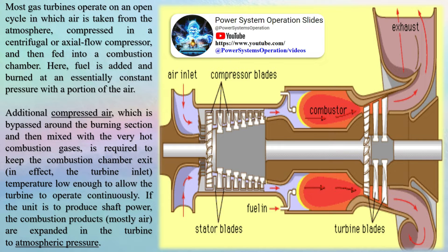Additional compressed air, which is bypassed around the burning section and then mixed with the very hot combustion gases, is required to keep the combustion chamber exit — in effect, the turbine inlet temperature — low enough to allow the turbine to operate continuously.